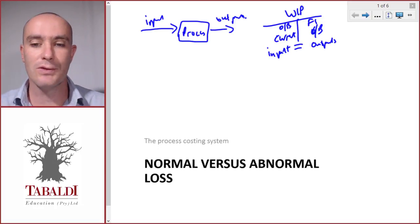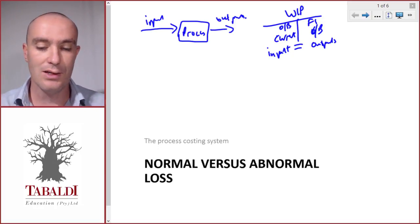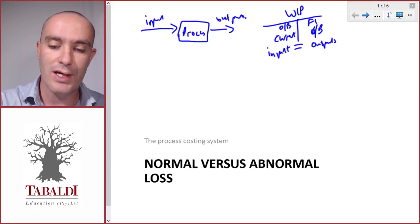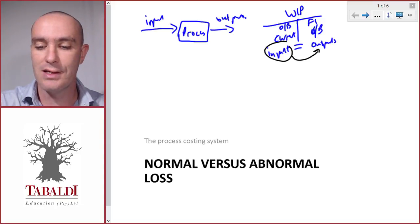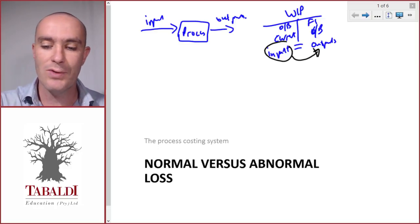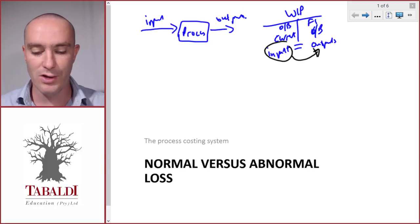That's in a perfect world. But now, in reality, losses take place. And there's two categories of losses. Loss is when all the inputs do not reach the stage of the finished goods or the closing work in process. Somewhere along the line, it goes missing. Let's look at the two types of losses.